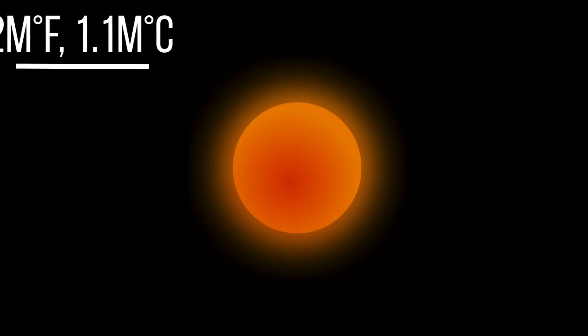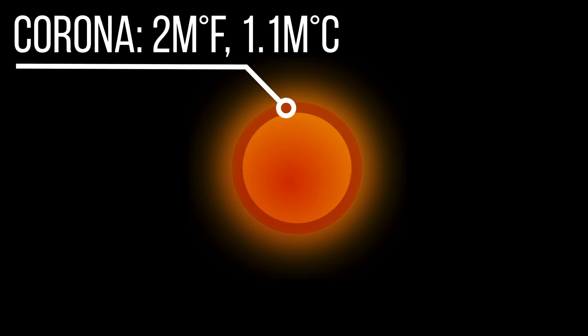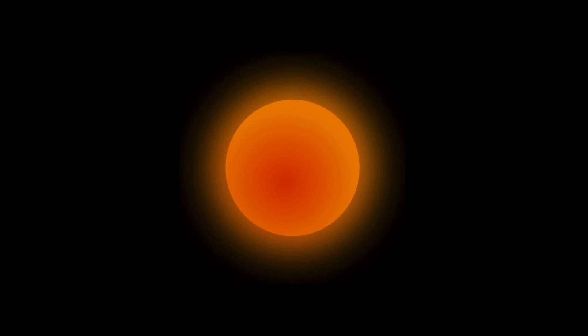On the outside layer of the sun, the corona, temperatures reach up to 2 million degrees Fahrenheit, or 1.1 million degrees Celsius. This heat excites ions and electrons in the corona, making them zip around super fast, so fast that they can escape the massive gravitational pull of the sun, sending them hurtling outwards, sometimes toward Earth.